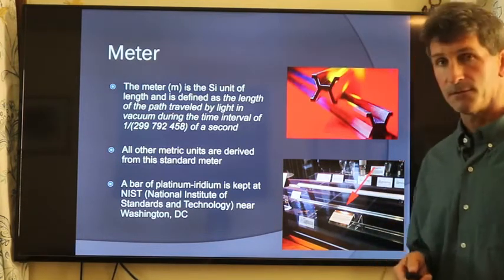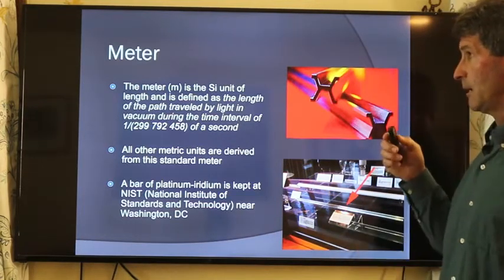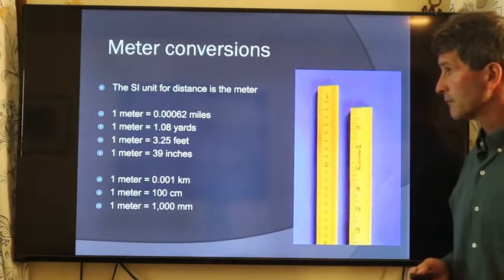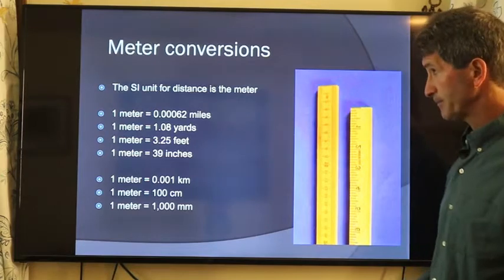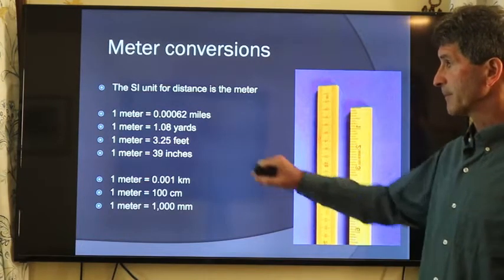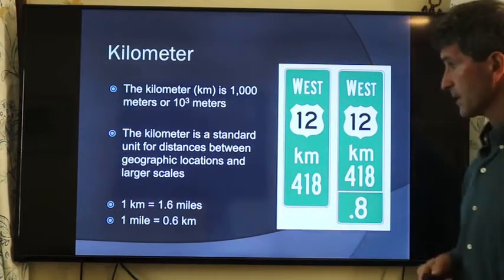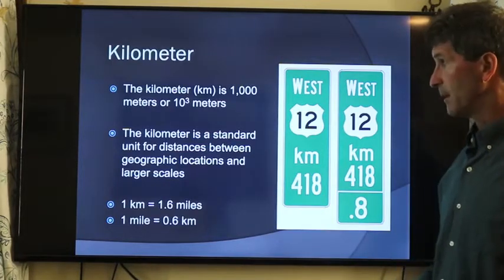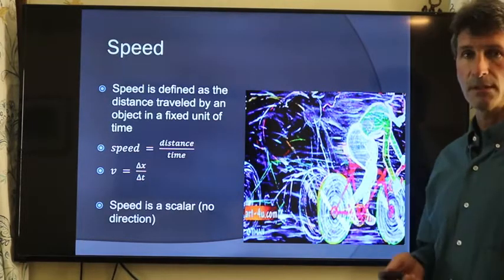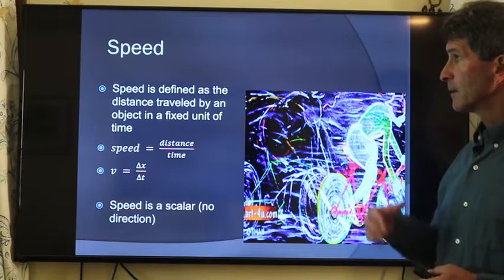All of the metric units of distance are derived from the standard meter. While the meter is the SI unit for length, all those other metric units are part of the metric system. Converting meters, you're probably aware that a meter is roughly about a yard. Converting meters into miles is roughly about 1,600 miles in a meter. A meter is about 3.25 feet, or about 39 inches. Any time that we're describing distances of length, we're typically going to stick to the meter in this course because that is an SI unit.